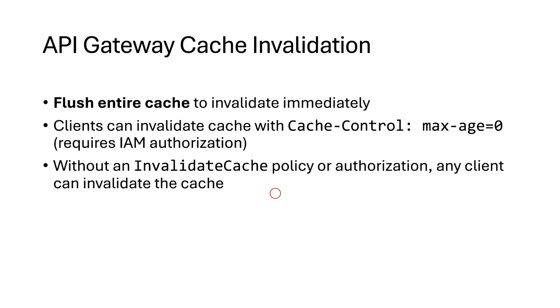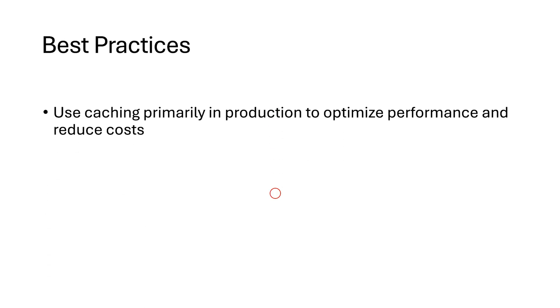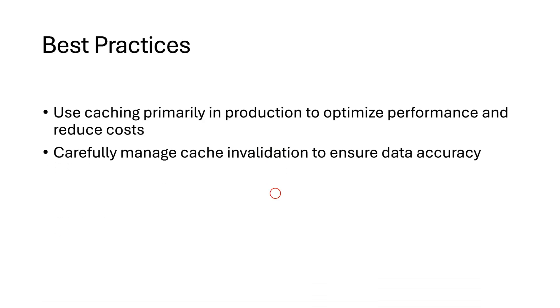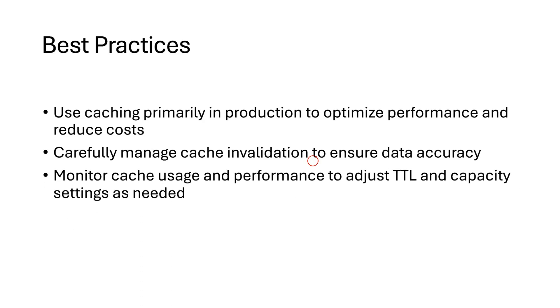In summary, caching is a very powerful feature in API Gateway that can greatly improve your API's performance and reduce backend load. However, it's important to manage it carefully, especially when it comes to cache invalidation, to ensure your data remains accurate and your API performs optimally. You should also monitor cache usage and performance to adjust the TTL and capacity settings as needed.